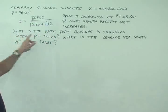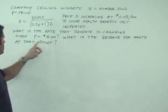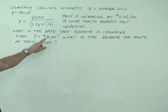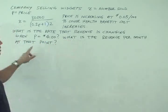And so every month the price increases by five cents. And the question is, what is the rate that the revenue is changing when the price is four dollars, and what is the revenue per month at that point?